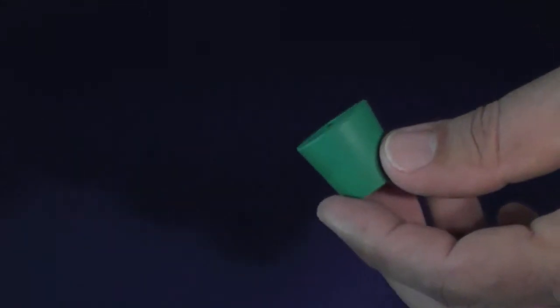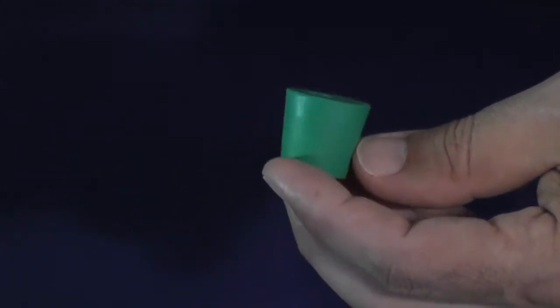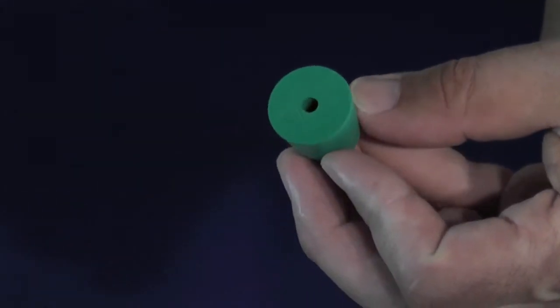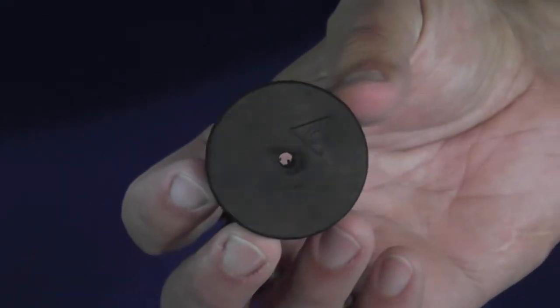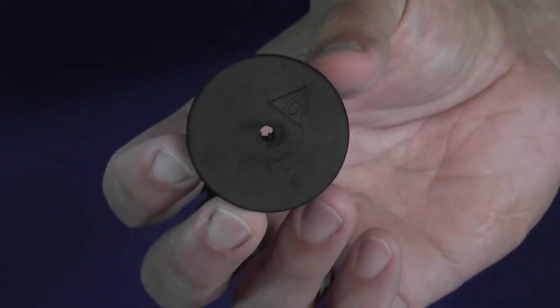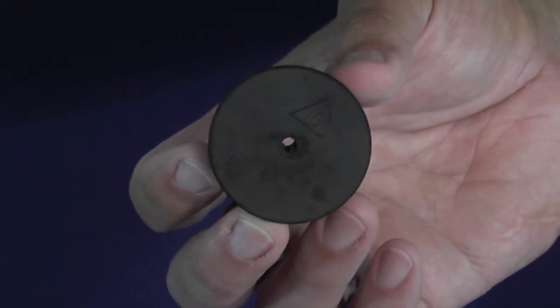Stoppers are available in either black rubber or the more autoclave-tolerant green neoprene, and in sizes ranging from number 5 or smaller to number 10 or larger. They come standard with a 5/16 inch diameter hole, but can be special ordered as you wish.